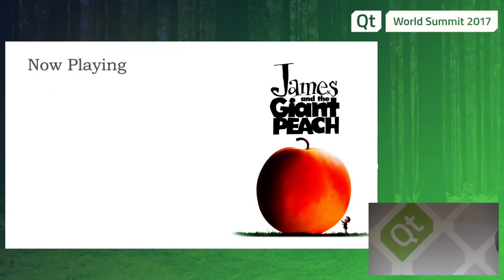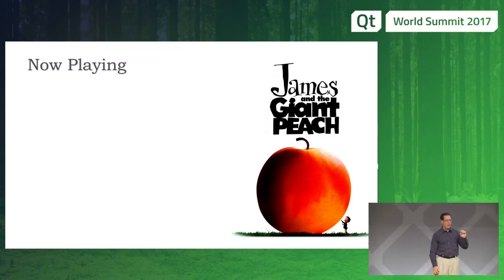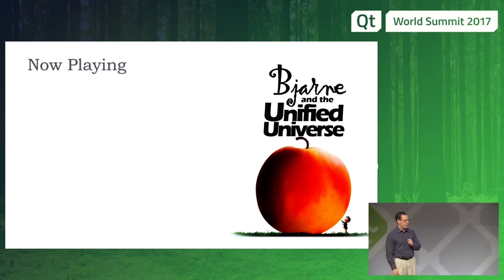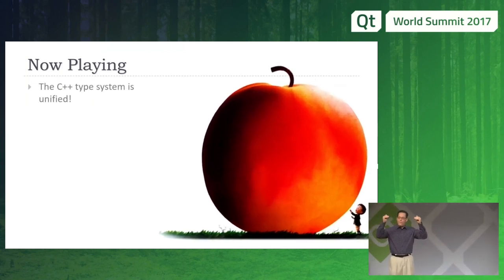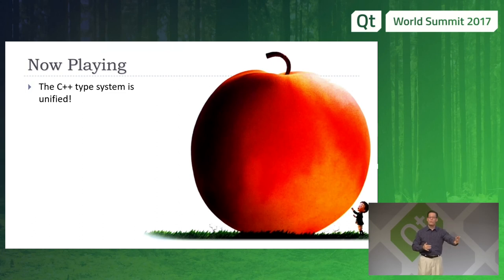None of what I'm saying is going to be possible without something that Bjarne Stroustrup hewed to very firmly for the last 30 years. We're going to talk about Bjarne and the unified universe of types. One of the things Bjarne Stroustrup took a firm stand on from the early days of C++ is that — by his account — he said no to hundreds or thousands of people who asked him to bifurcate the C++ type system.